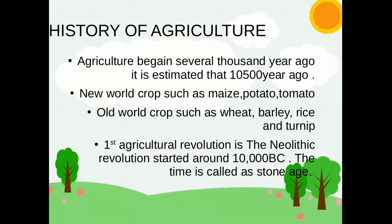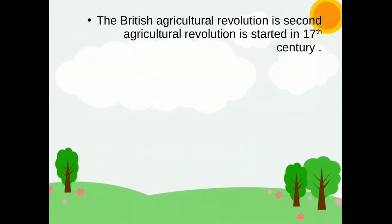What is the history of agriculture? Agriculture begins several thousands of years ago. It is estimated that 10,500 years ago. New world crops such as maize, potato, and tomato. Old world crops such as wheat, barley, rice, and turnip. The first agriculture revolution is the Neolithic revolution, started around 10,000 BC — this time is called the Stone Age. The British agriculture revolution is the second agriculture revolution, which started in the 17th century.